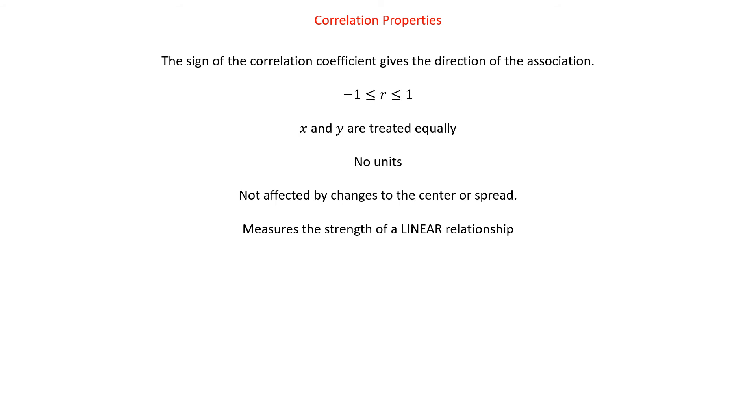It measures the strength of a linear relationship — that is hugely important. And it's sensitive to outliers. Finally, correlation does not mean causation. Sometimes things look correlated but there's really no good reason for them — accidental correlation. Just because there's a high correlation doesn't mean it's a cause-effect relationship. A lot of what we try to do is establish cause and effect, and the human brain does that automatically. Sometimes we're right, sometimes we're not.